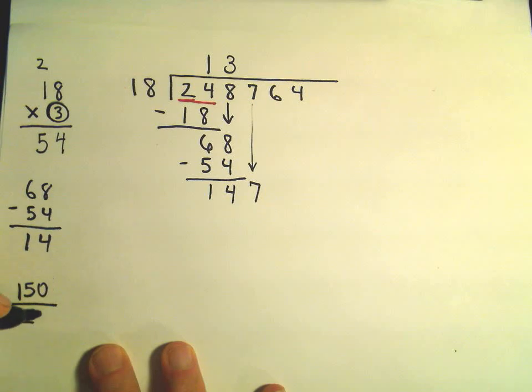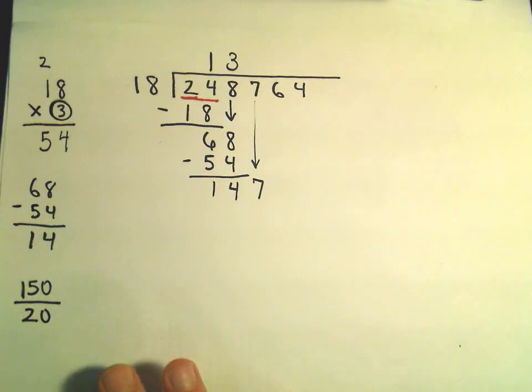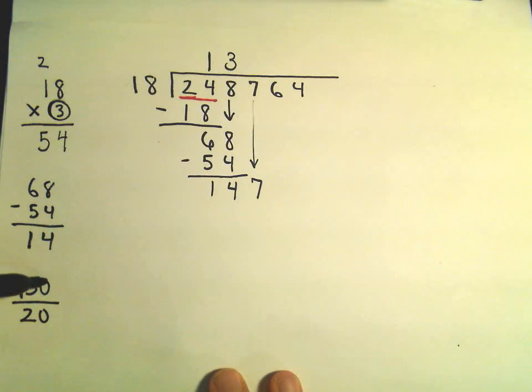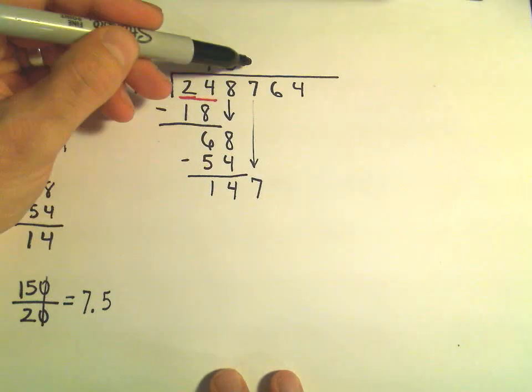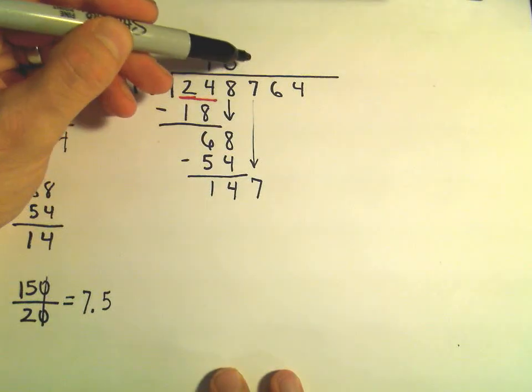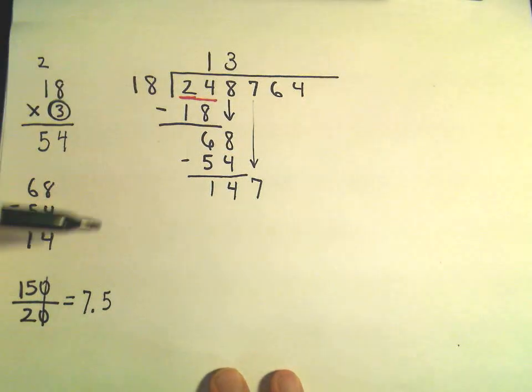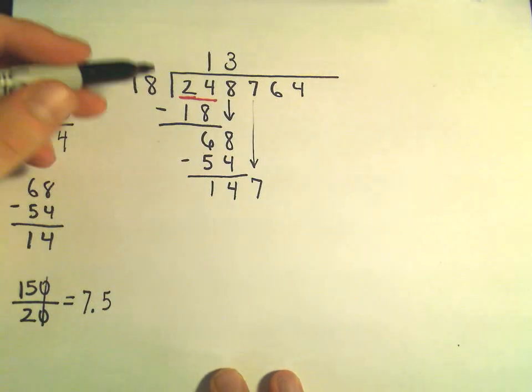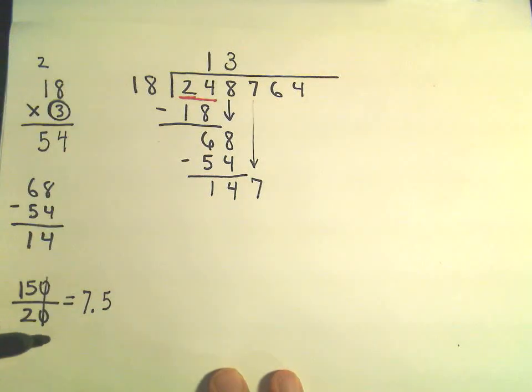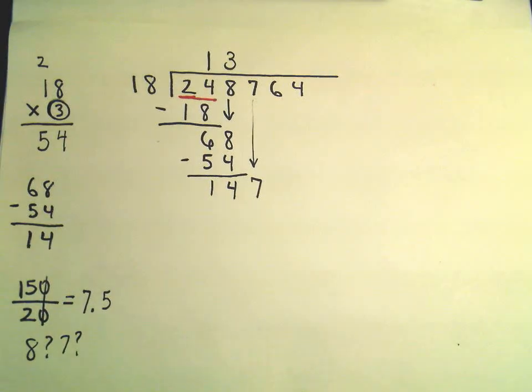I'm going to pretend 18 is 20 and 147 is 150. So if I take 150 over 20, that's what I basically am doing in my head. Well, we can simply get rid of the zeros. 15 divided by 2, that's going to be 7 and some change. I believe 7.5. So I'm thinking probably that number that goes on top. And since 18 is smaller than 20, it might go in even more times. You know, so I'm thinking maybe 8, maybe 7.